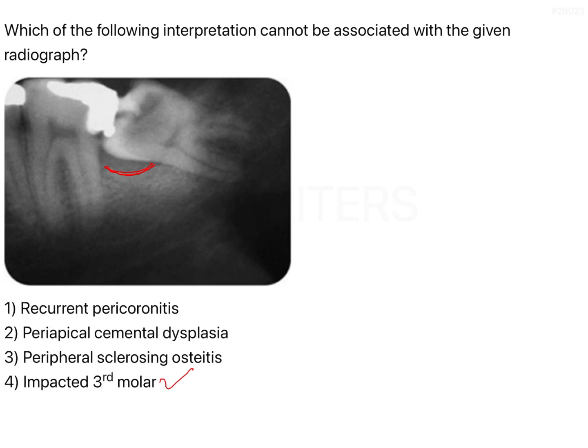The soft tissues around the third molar get inflamed and become edematous, covering the tooth. This causes impingement between the upper tooth, lower tooth, and soft tissue — which worsens during occlusion. The maxillary teeth continuously impinge on the soft tissue, causing trauma. Eventually the patient starts complaining of pain due to the edema, irritation from food lodgment, and trauma from the maxillary tooth.